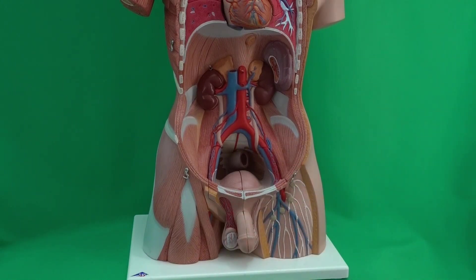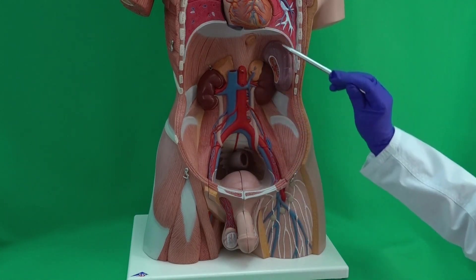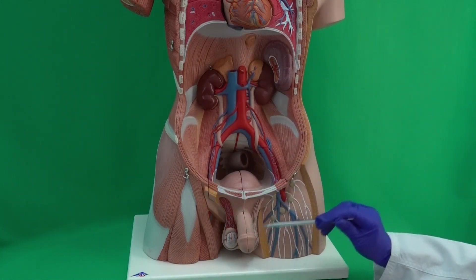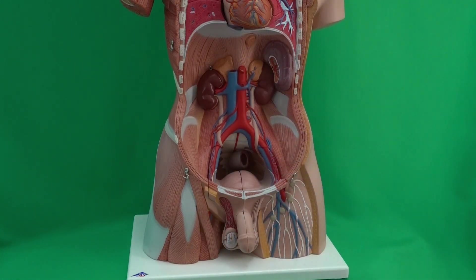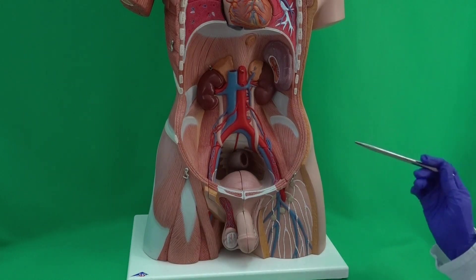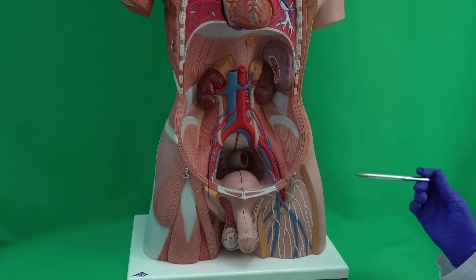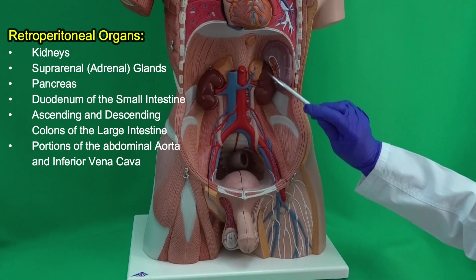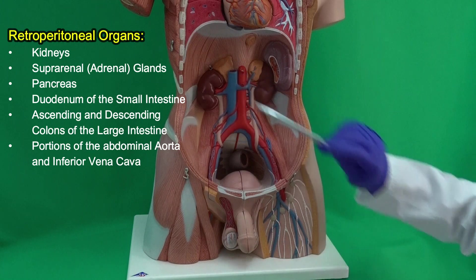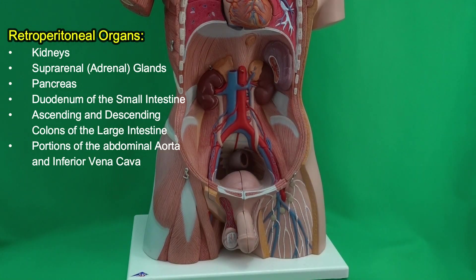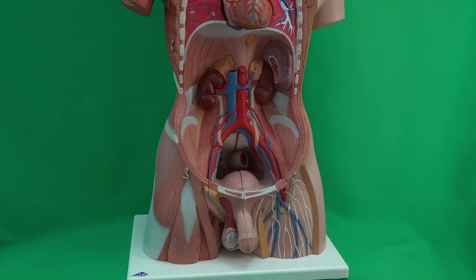These are some important structures that we find in the abdominal cavity and the pelvic cavity. Please note that organs I did not talk about — for example, kidneys or suprarenal glands — are considered retroperitoneal. In a separate video, I will walk you through the location of those organs. I hope you find this helpful.